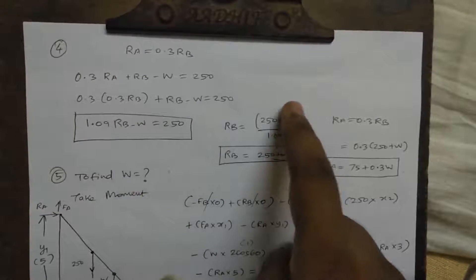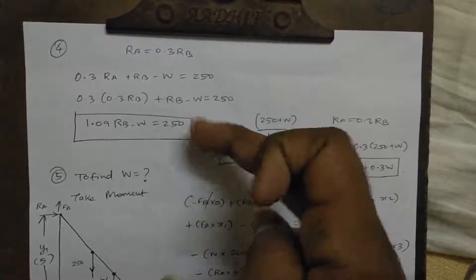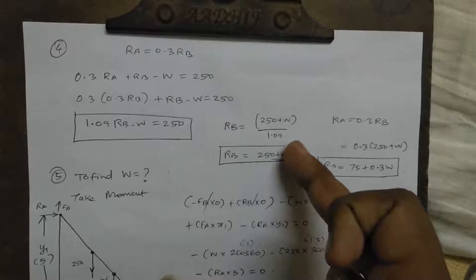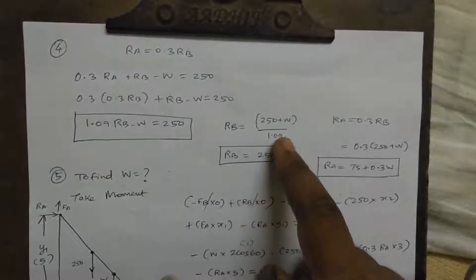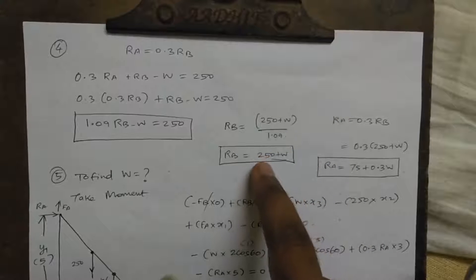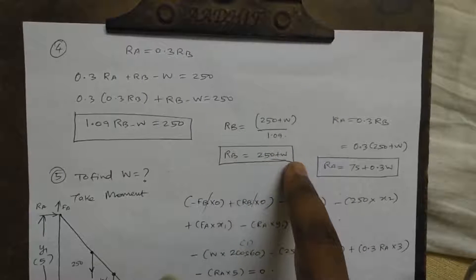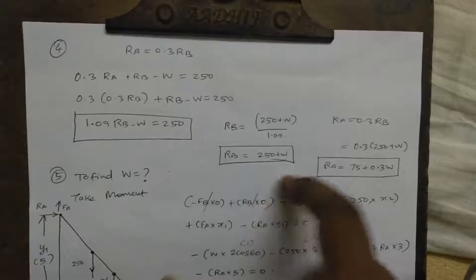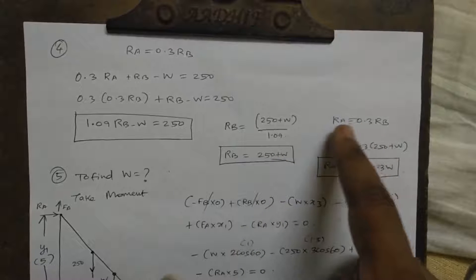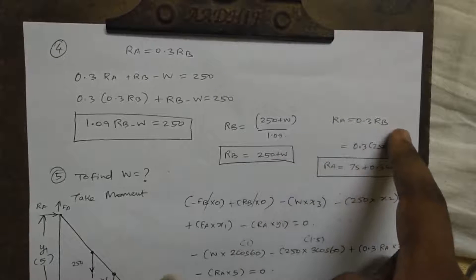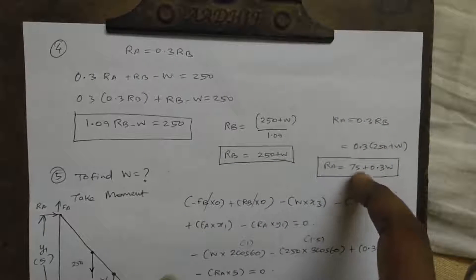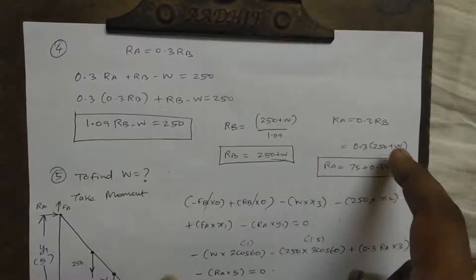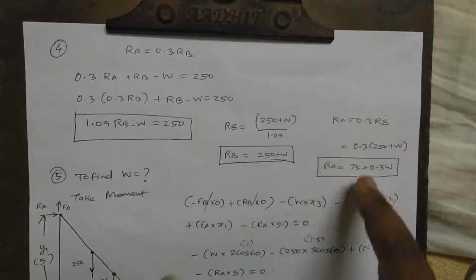So 1.09 RB minus W equal to 250 plus W. Dividing through, RB value is equal to 250 plus W divided by 1.09.